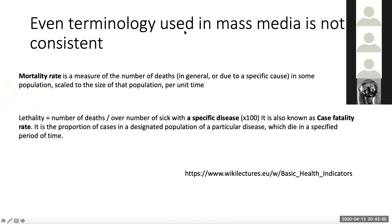Even the terminology used in mass media is not really consistent. Just recently I read that the 'mortality rate for coronavirus is estimated to be three percent.' Mortality is the ratio of people who died to the total population — if it were really three percent, that would be a real disaster already. The more correct terminology would be 'fatality rate' — how many people die who actually had the virus — multiplied by 100 to get the percentage. At least that's what Wikipedia tells us.